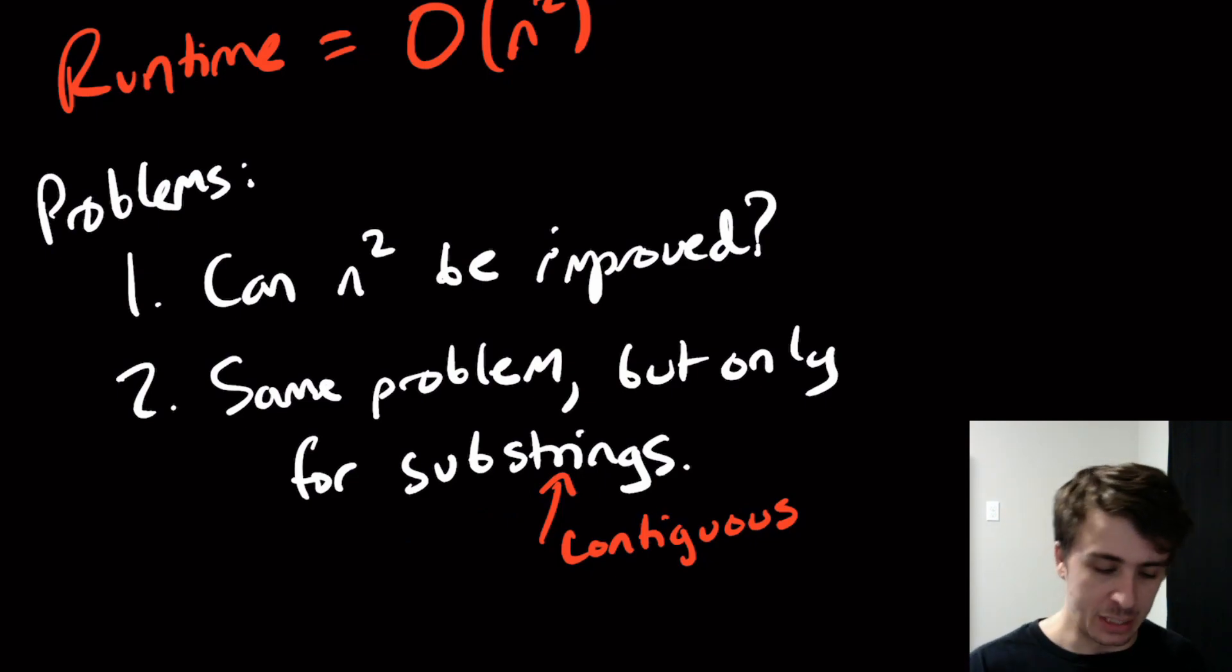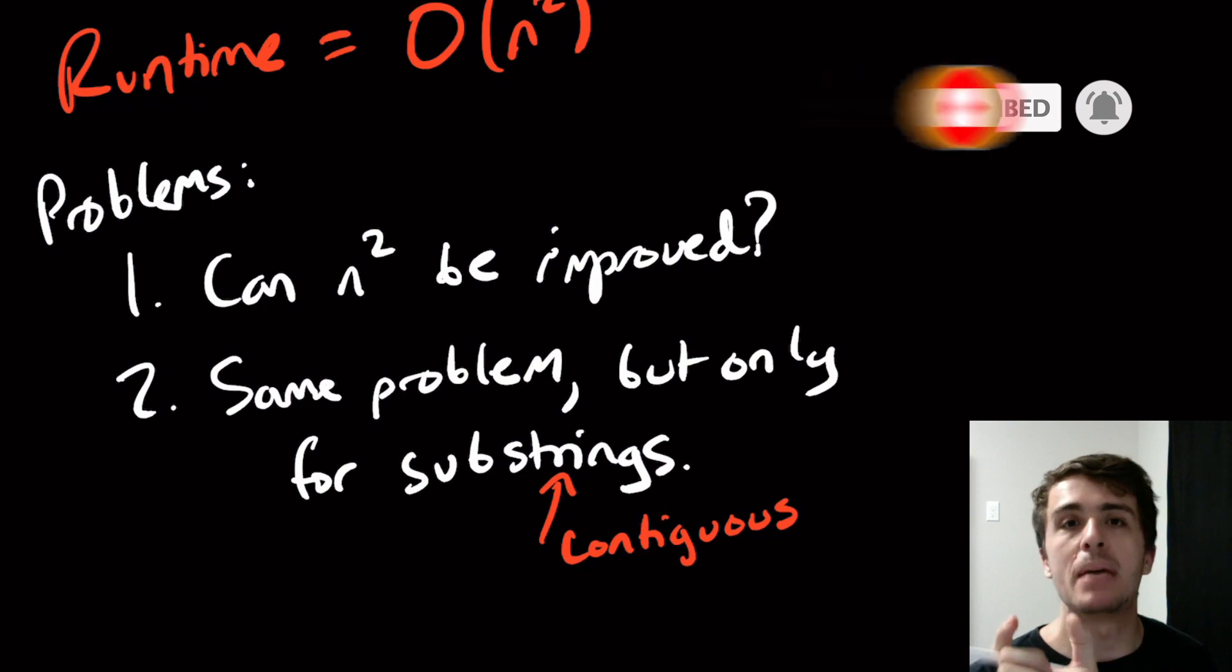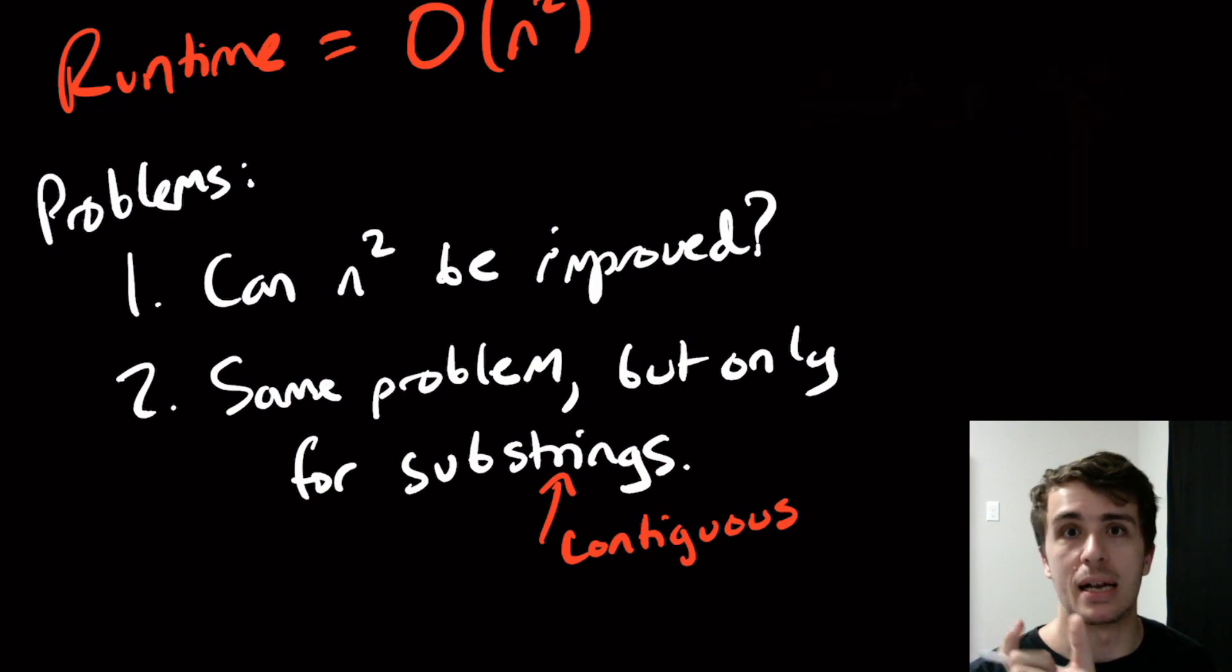Because I could just run the exact same algorithm for substrings and it works just fine, because every substring is a subsequence. But is it the case that we can actually do better? Is there something about having things being contiguous that makes the problem easier, or is it not possible to be faster than n squared?